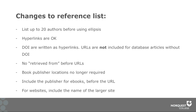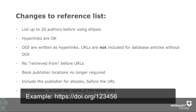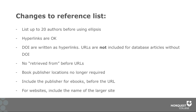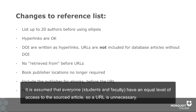If your source is a scholarly article, it might have a DOI number. DOI numbers are now to be written as hyperlinks. This is a change from the previous version of APA. If your article is a scholarly article but does not have a DOI, you don't have to include a database link. It's not necessary to include any information about the location of that article on the internet if it's easily available in a database.